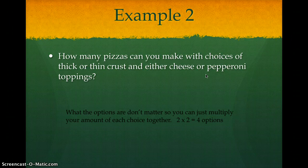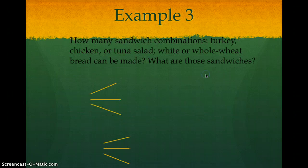Let's look at the last one. I want you to go ahead and pause before you answer it and solve it on your paper. All right. So it says, how many sandwich combinations of turkey, chicken, or tuna salad, white or whole wheat bread can be made? And what are those sandwiches?